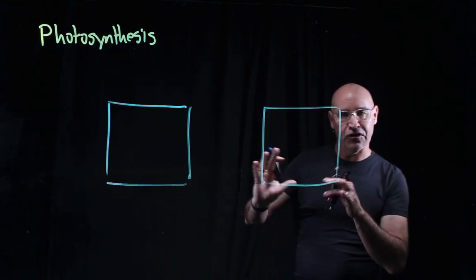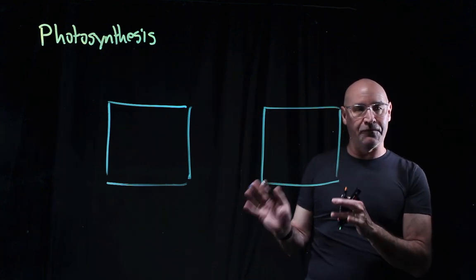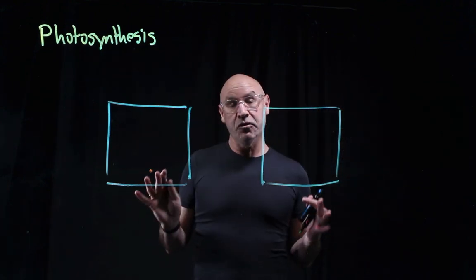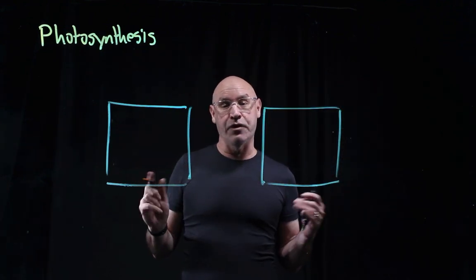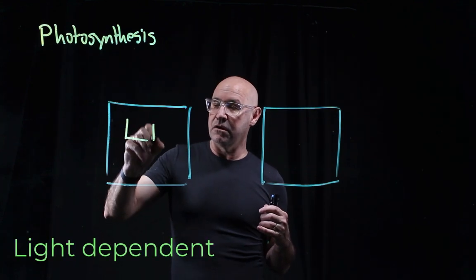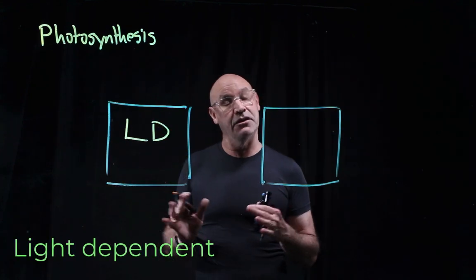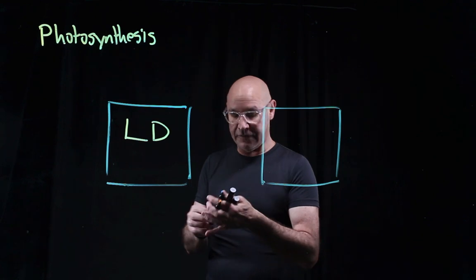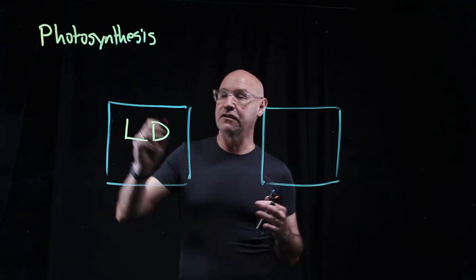They represent the two key parts of photosynthesis. First we have the light dependent reactions. Light dependent - they depend on light, so one of the inputs is sunlight.